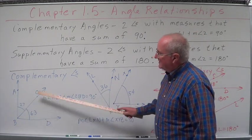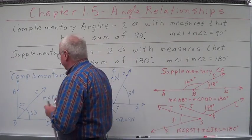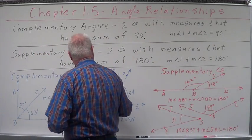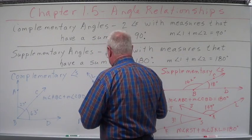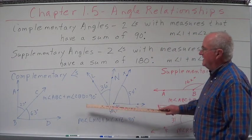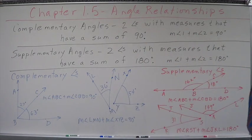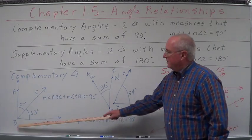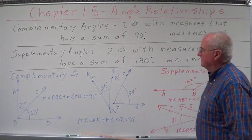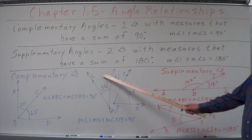Here's some examples. Complementary angles: we have angle ABC, which is 27 degrees, and angle CBD, which is 63 degrees. The measure of angle ABC plus the measure of angle CBD equals 90 degrees. These two angles also happen to be adjacent. Ray BA is perpendicular to ray BD — it forms a right angle. However, complementary angles do not have to be adjacent; they can be separate.